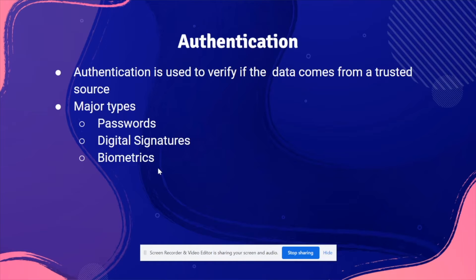Biometrics includes retinal scans, fingerprint scanners, and facial recognition — all of which are very reliable because they are unique. A retinal scan scans your eyes, facial recognition scans your face, and fingerprint scanners scan your fingerprint. No two fingerprints are the same, no two retinal scans are the same, and no two faces are the same, although some might be similar.